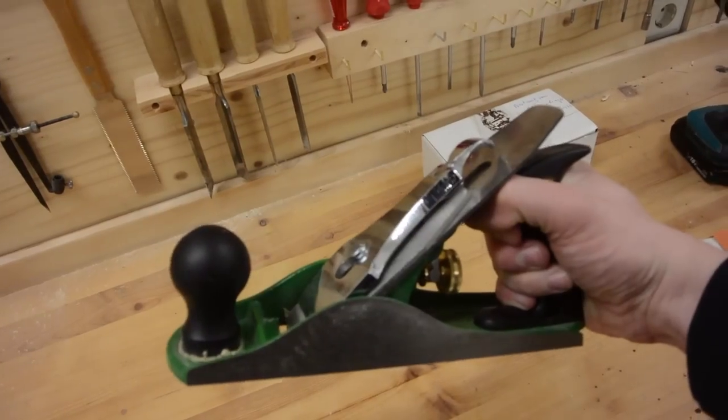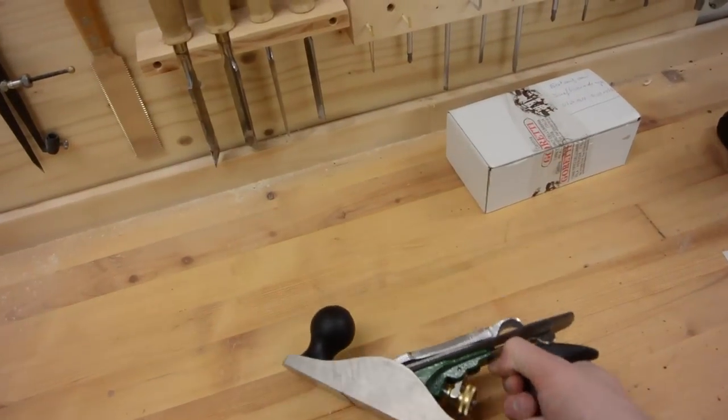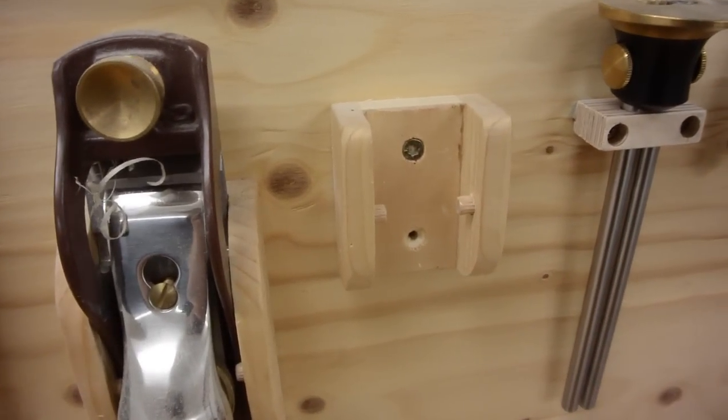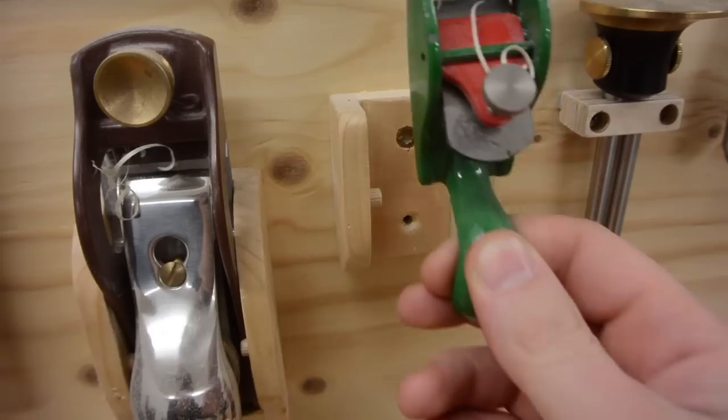I want to make a holder for this hand plane. I want to keep it really simple, just like the holders for my two small planes here, with just two pieces of dowel holding the planes in place.